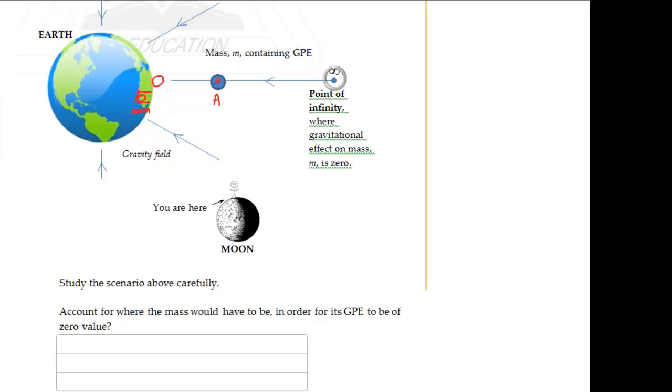So at that point, where there is no more gravitational effect on the mass, that mass will actually have zero GPE value. Okay? Think about that for a moment. Pause this video if you have to, but think about that for a moment. This is not a simple concept to grasp.